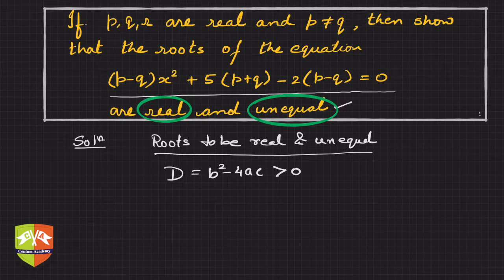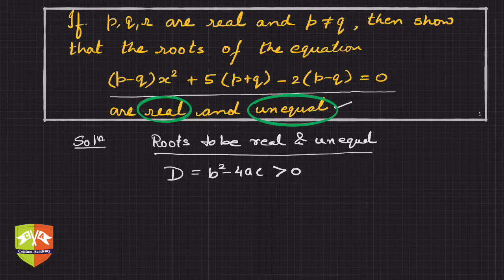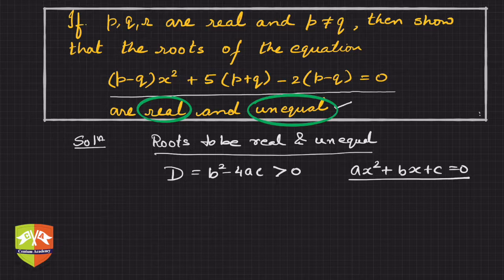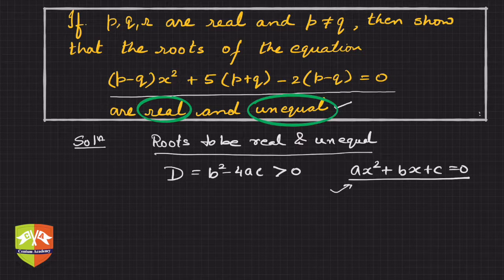Here a, b, and c are nothing but the coefficients of the variables in the standard quadratic equation ax² + bx + c = 0. If this quadratic equation has to have real and unequal roots, then this condition must be true.